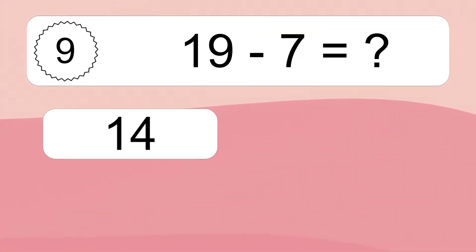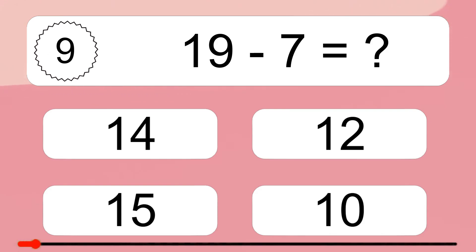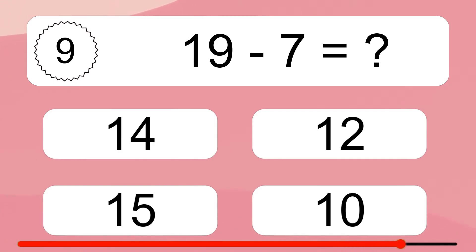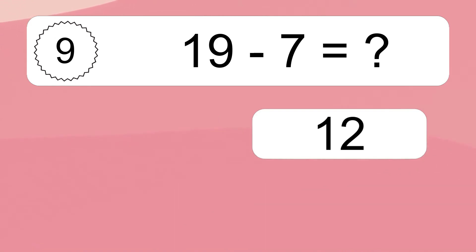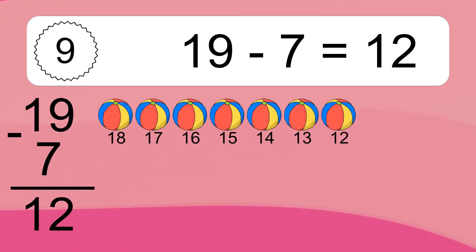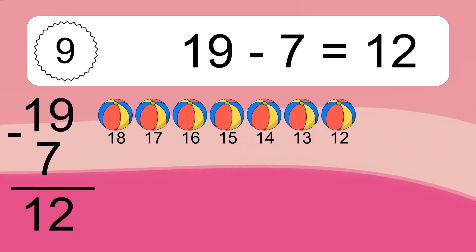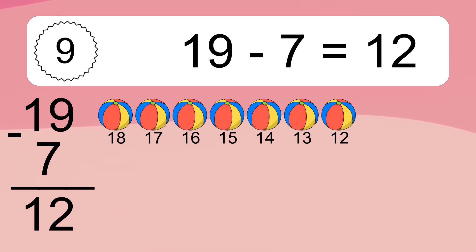19 minus 7 equals what? 19 minus 7 equals 12. Let's count it: 18, 17, 16, 15, 14, 13, 12.